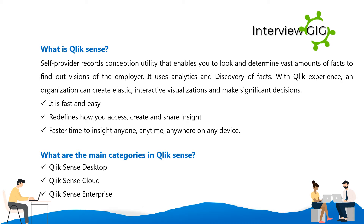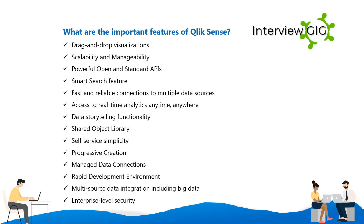Anyone, anytime, anywhere, on any device. The main categories in Qlik Sense are: Qlik Sense Desktop, Qlik Sense Cloud, and Qlik Sense Enterprise. The important features of Qlik Sense include drag-and-drop visualizations, scalability and manageability, powerful open and standard APIs, smart search feature, fast and reliable connections to multiple data sources, and access to real-time analytics anytime, anywhere.